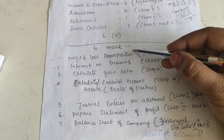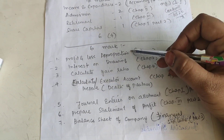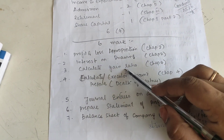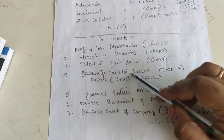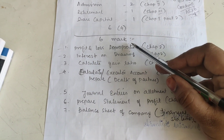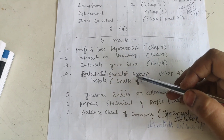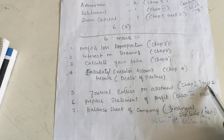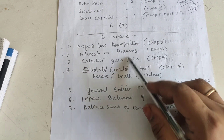For 6-mark questions, profit and loss appropriation account is a must, and interest on drawings is a must — both are from Chapter 2. From Retirement, calculate the gain ratio. From the Death of a Partner, you need to make an executor account, which is also very easy and is a must question. Going through these, you will be able to answer four of the six-mark questions. Writing the journal entries of share application and allotment is also a good option if you are not getting a proper answer in any of the others.